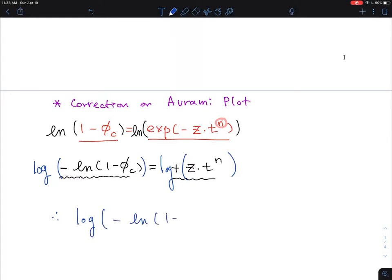By doing so, your y-axis is now common log of minus natural log of (1-φc), equal to log z plus n times log t. So it is log t.